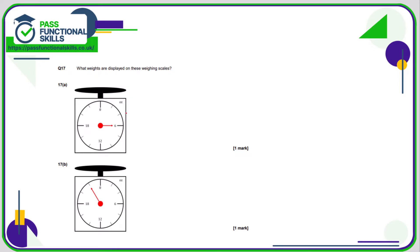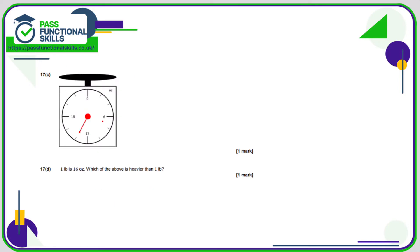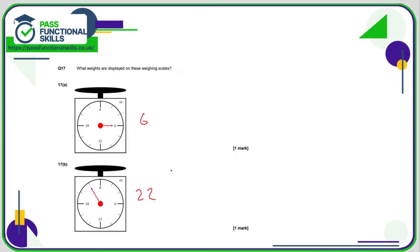Question number 17. Here is ounces, but again it's just reading scales, dead easy. So this is 6. This one, we're not going up in ones. 6, 8, 10, 12, 14, 16, 18, 20, so that is 22 ounces. And we're going up in two, so that is 14 ounces. One pound is 16 ounces. So which of the above is heavier than a pound? Well, this is lighter, so this is heavier, and this is much lighter.